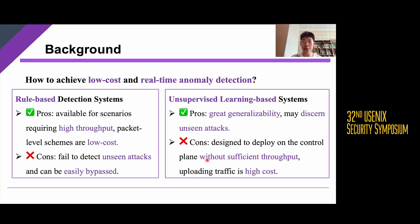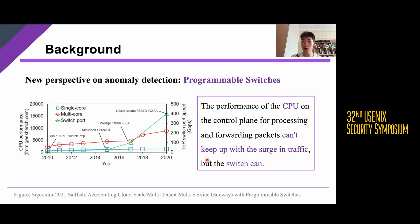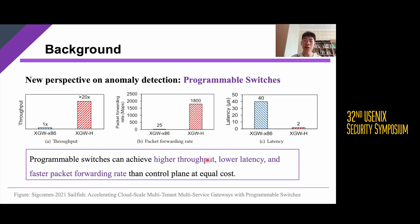How do we achieve low-cost and real-time anomaly detection? Traditionally, rule-based systems are utilized with high throughput requirements. However, rule-based systems fail to detect unseen attacks and can be easily bypassed. One promising avenue is the use of unsupervised learning with great generalizability, which may discern unseen attacks. But these systems are designed to deploy on the control plane without sufficient throughput, and uploading traffic is high cost. Fortunately, the appearance of programmable switches has brought us a new perspective. Recently, the performance of switches in processing packets has far exceeded that of CPUs on the control plane. CPUs cannot keep up with the surge in traffic, but switches can. Additionally, programmable switches can achieve higher throughput, lower latency, and faster packet forwarding rates than the control plane at equal cost.